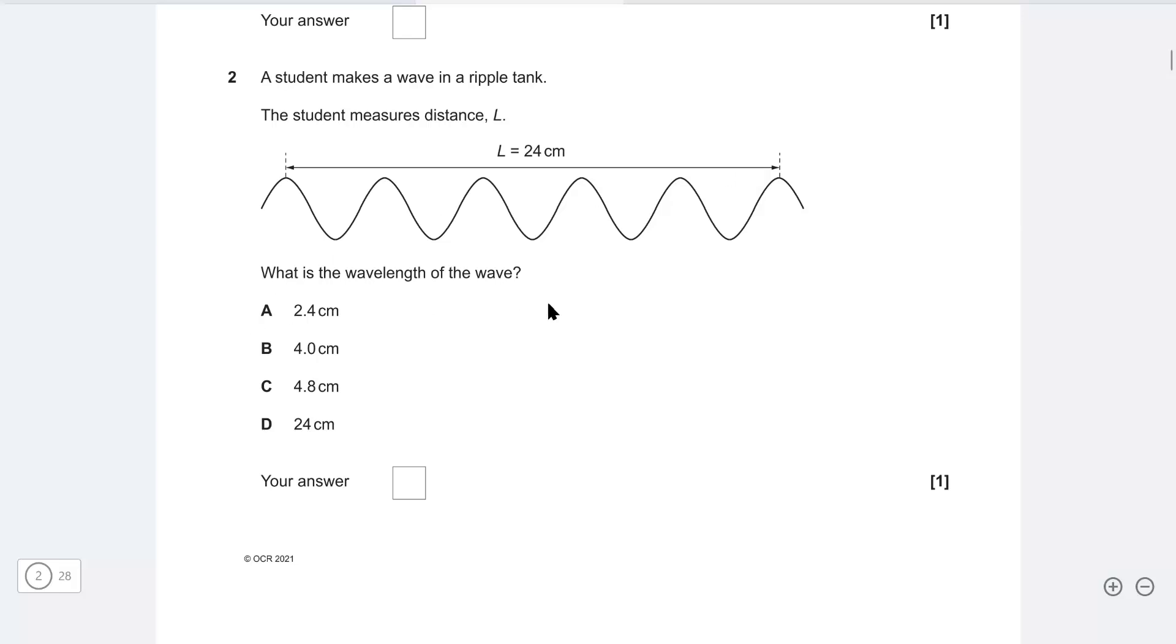What is the wavelength of the wave? Okay well the wavelength is defined as the peak to peak distance. So the distance from here to there. So it's going to be one, two of them, three, four, five. So five of these distances are contained within the 24 centimeters.